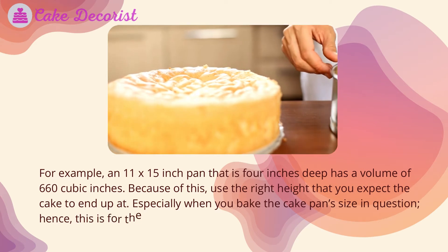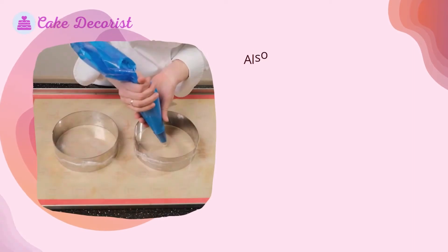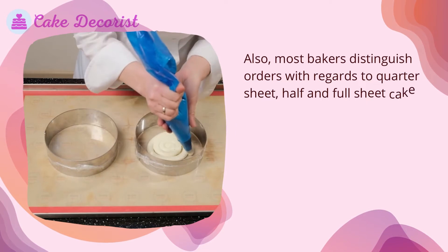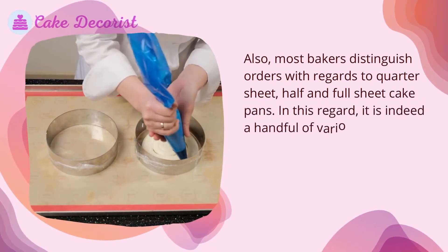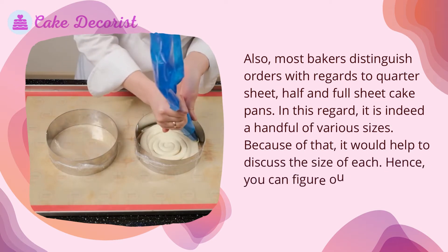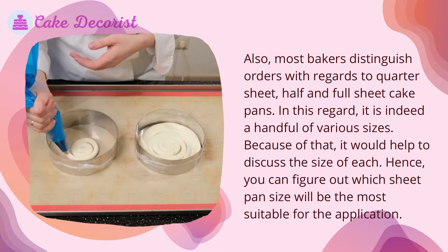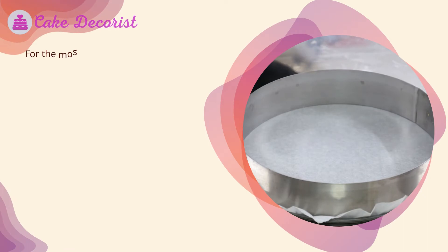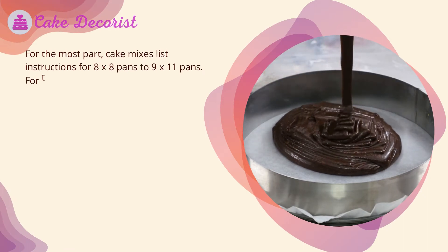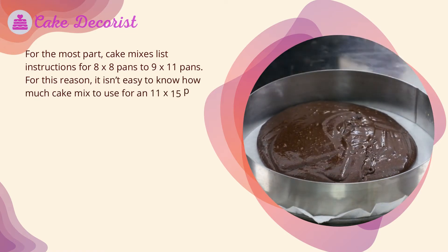Especially when you bake, the cake pan size is important for the depth measurement of a cake. Most bakers distinguish orders with regards to quarter sheet, half, and full sheet cake pans, and there are indeed a handful of various sizes. Cake mixes typically list instructions for eight by eight pans to nine by eleven pans, so it isn't easy to know how much cake mix to use for an 11 by 15 pan.